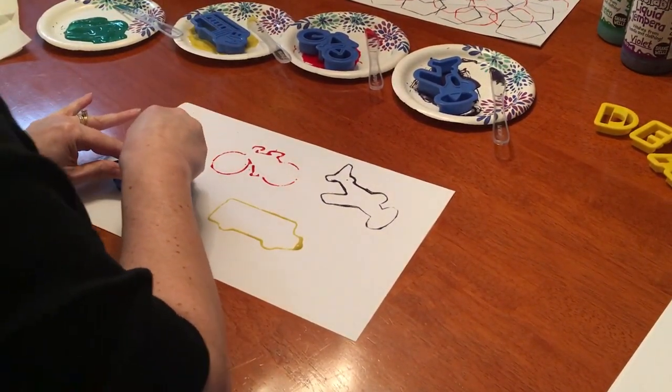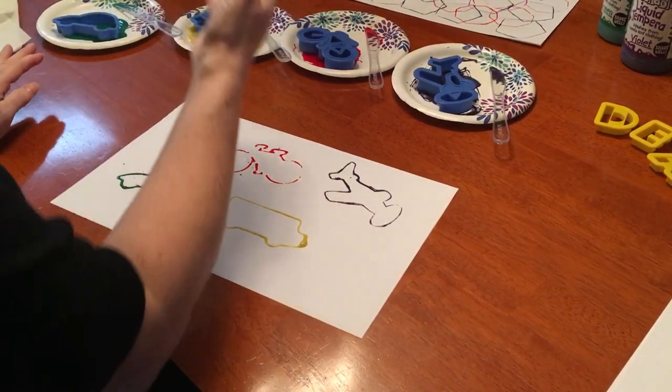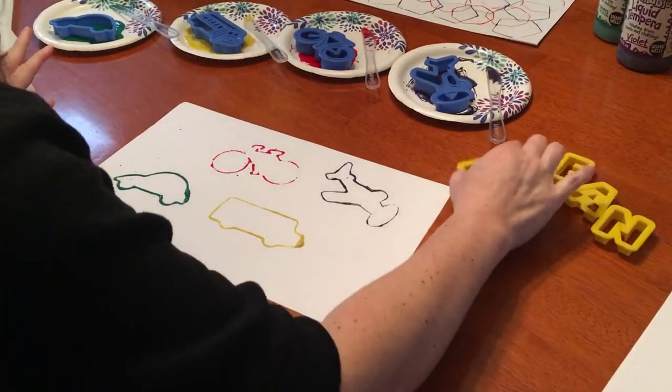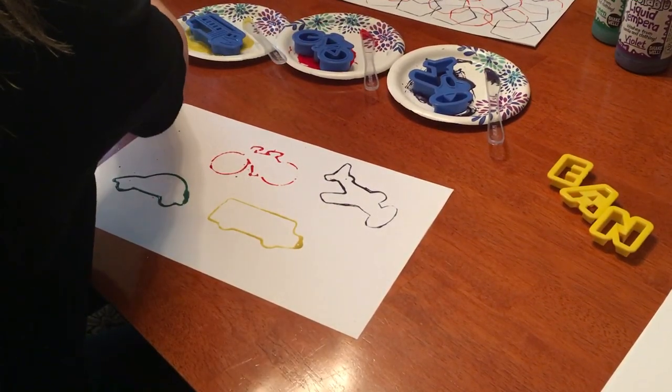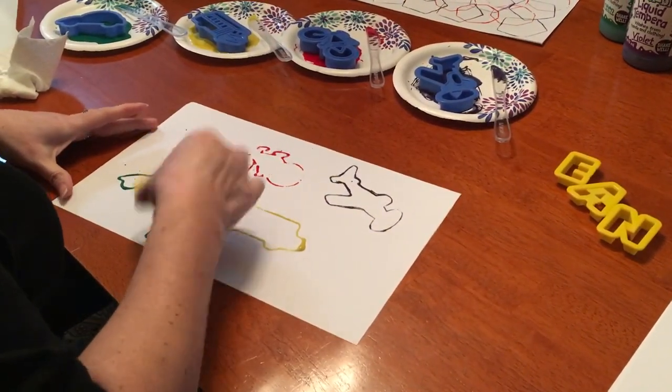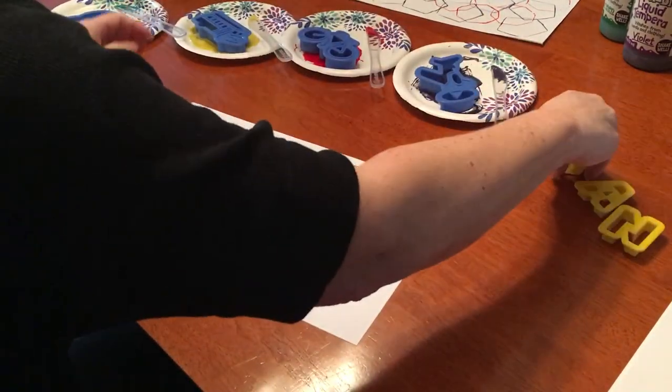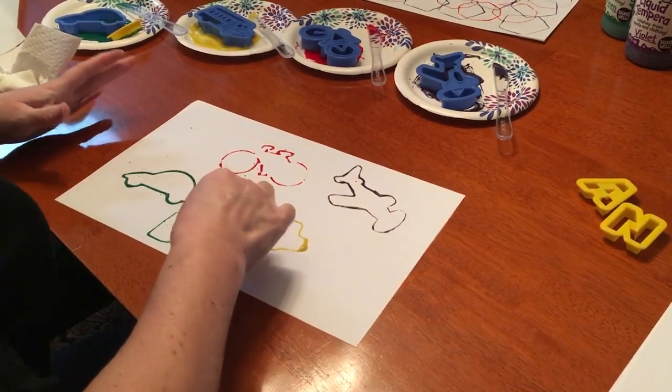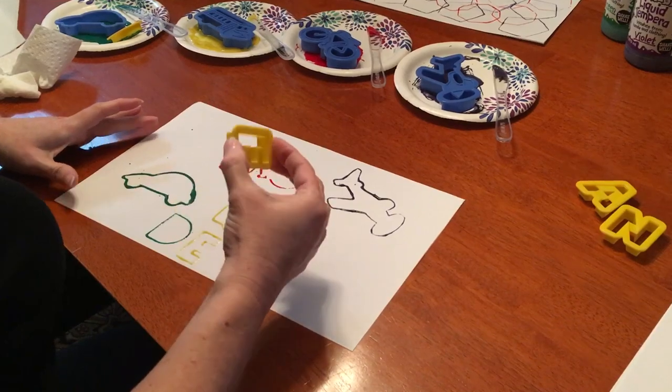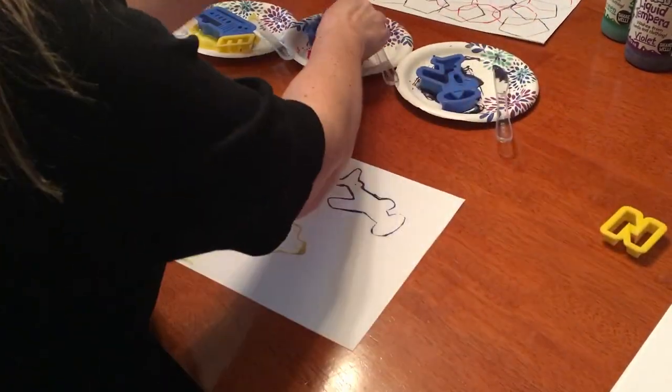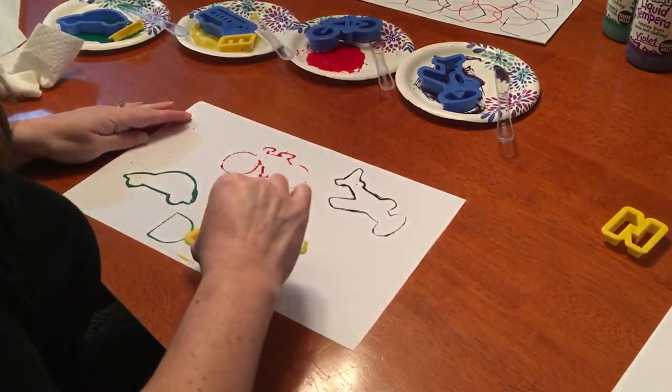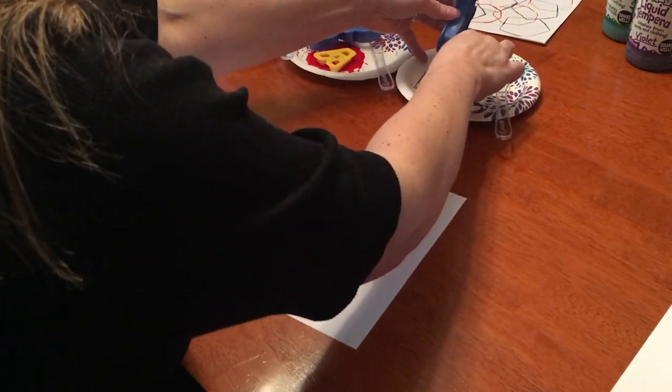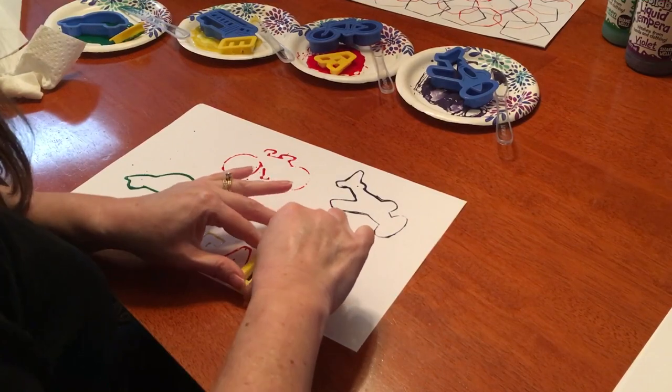And then we have a green car. I have some paper towels to clean up with, but they could also, if you had letters and numbers, they could spell their name out on their paper if they wanted to do that. This would help them with their alphabet too if you had younger kids. So let me just put my name here.